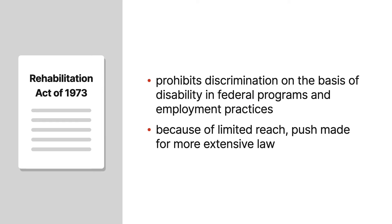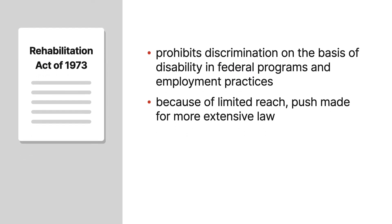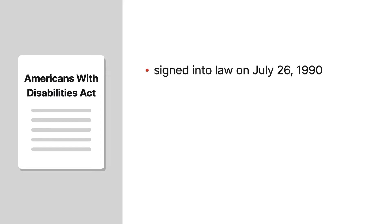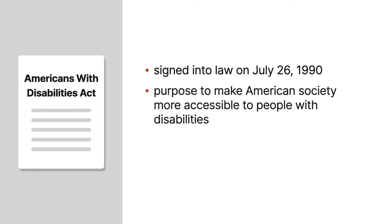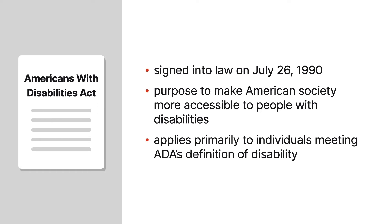disability rights advocates and lawmakers pushed for a more extensive law, which eventually culminated in the passage of the Americans with Disabilities Act. The ADA was signed into law on July 26, 1990. You can find the provisions of the law at 42 U.S.C. 12101 and the following provisions. The overall purpose of the ADA is to make American society more accessible to people with disabilities. The ADA's protections apply primarily, but not exclusively, to individuals who meet the definition of disability.